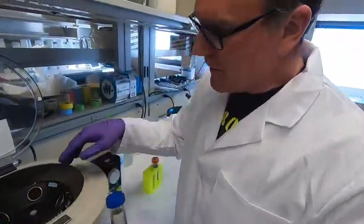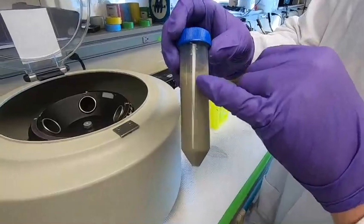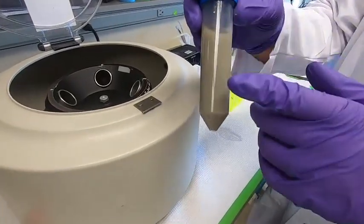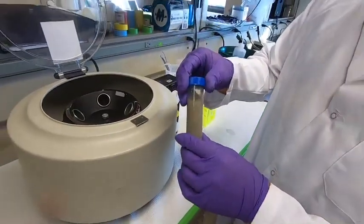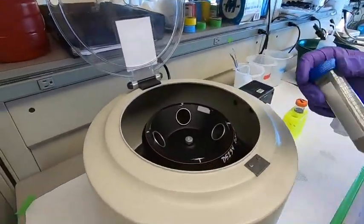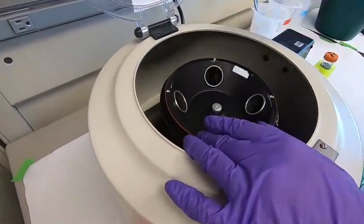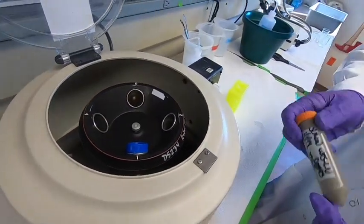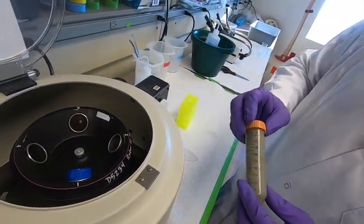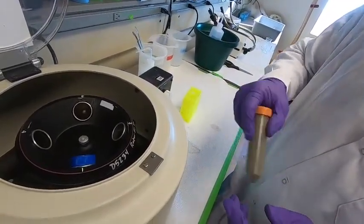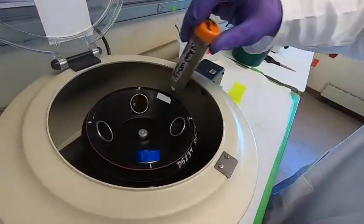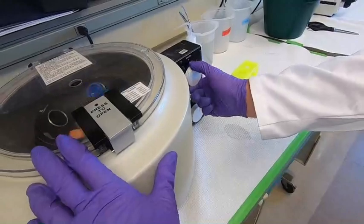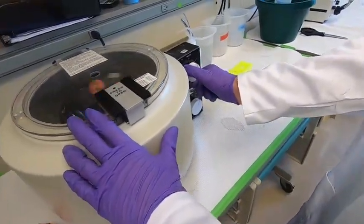On this step, we're going to put them in the centrifuge. We're going to spin them, and all the animals that are floating around in there should get spun down to the bottom of this. So you should have water on top and animals and a bunch of goo in the bottom. I'm going to run this for four or five minutes.